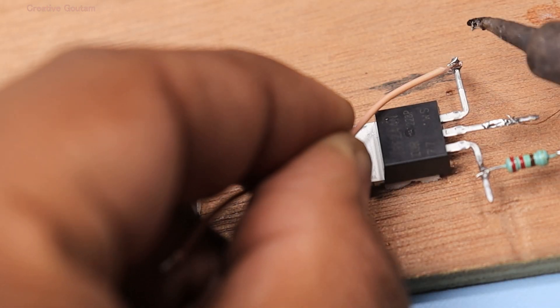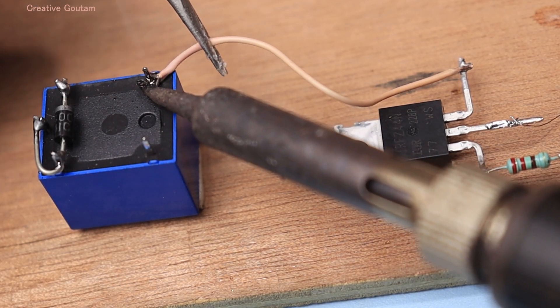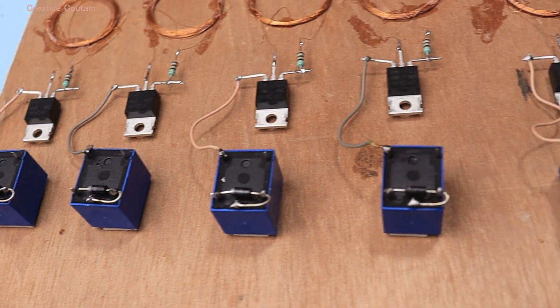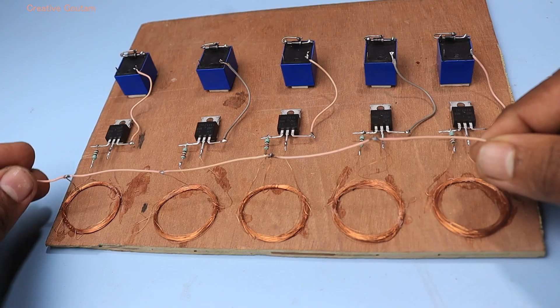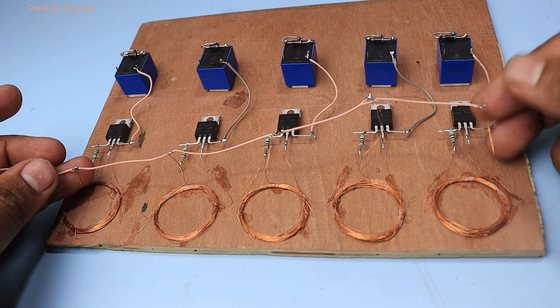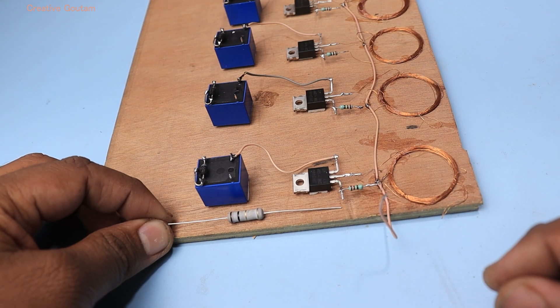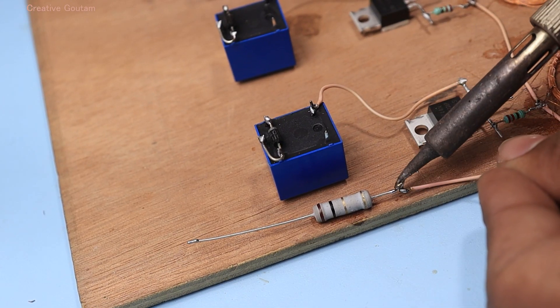I connected the source pin of the MOSFET to the normally open pin of the relays. Then I connected all middle wires together with a piece of wire and the wire connected to a 1 ohm 2 watt resistor.